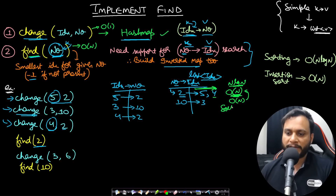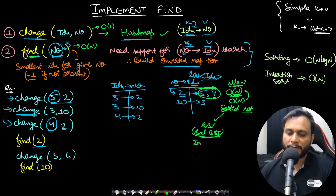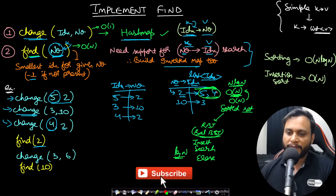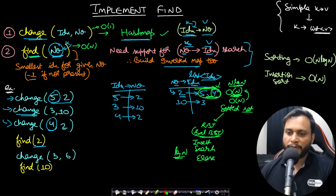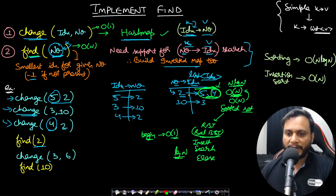We can optimize by using a sorted set instead of a plain list. A sorted set is implemented with a red-black tree (balanced BST), so insert, search, and erase are all O(log n). Inserting values into a sorted set means getting the minimum value is simply accessing the beginning of the set — O(1) — while insertion and erasure remain O(log n).